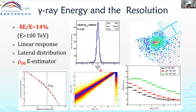The energy resolution is measured by fitting the lateral distribution with a modified NKG function. The particle density at 50 meters from the shower axis is used as the energy estimator. At lower energies the resolution is worse, but above 100 TeV it is quite good. The energy resolution improves from about 30% at low energies down to around 10% at the highest energies near 1 PeV.